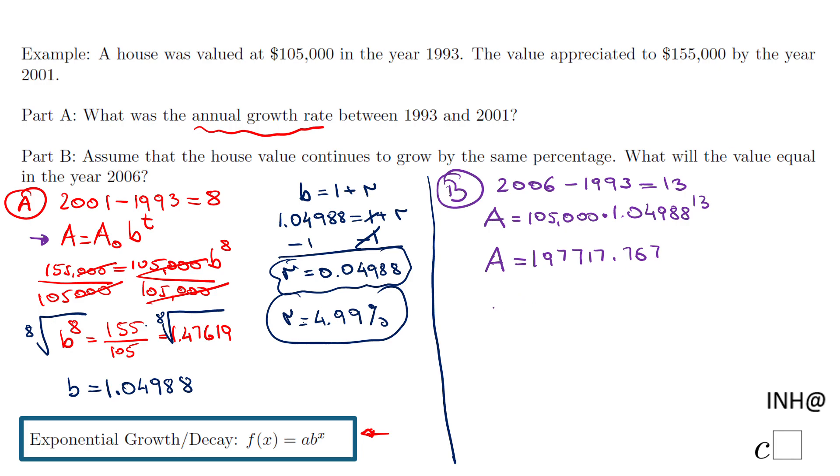This is the exact value. If I need to round to the nearest thousand, that would be $198,000.